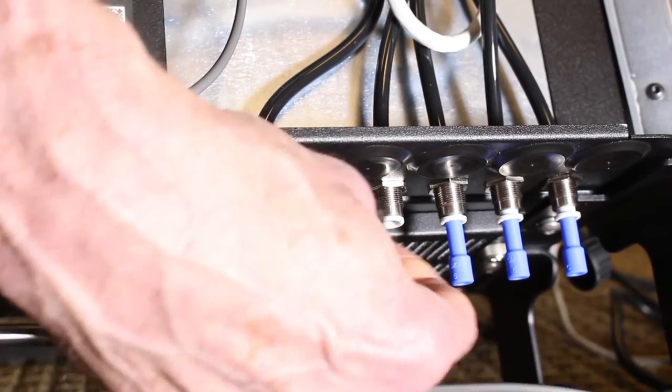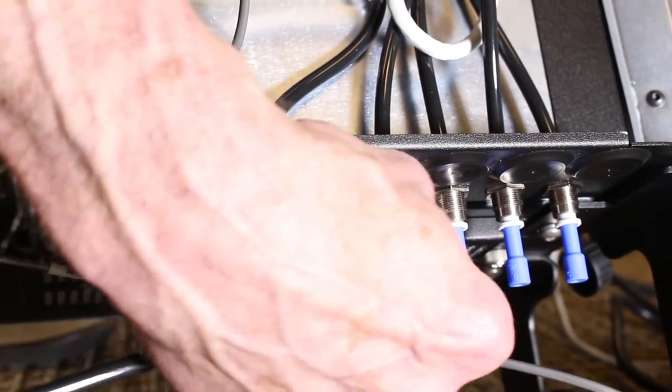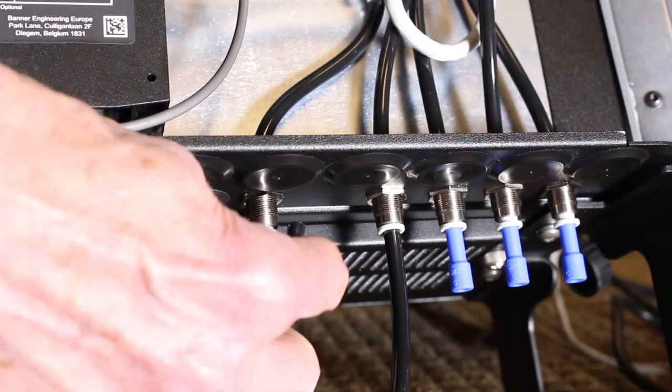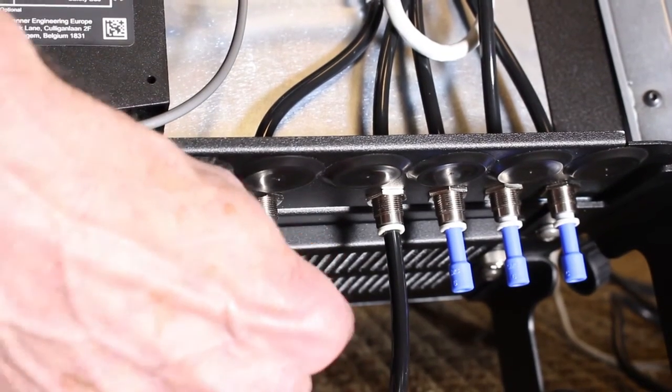Connect the input port to a six millimeter hose with 60 to 90 pounds of dry compressed air. Connect the output side to a hose that connects to the vacuum gripper.